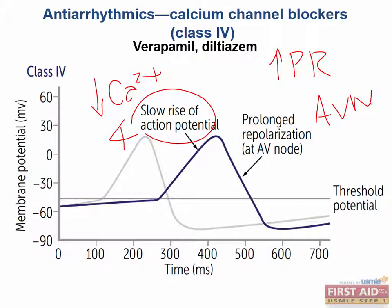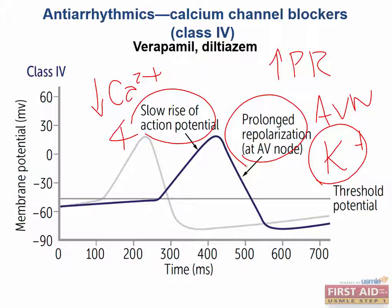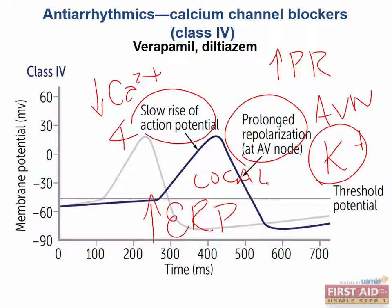Why do we prolong repolarization in the AV node? The potassium channels that open to allow efflux of potassium for repolarization open when activated by calcium influx. So if we're blocking the calcium channels responsible for changing the voltage to open these potassium channels, it is going to take longer for all of the potassium channels to be activated. Therefore, we lengthen or prolong repolarization. This prolongation also increases the effective refractory period, because we only have some calcium channels available for the next depolarization. We need to wait longer to create a full action potential that can propagate to other cells.